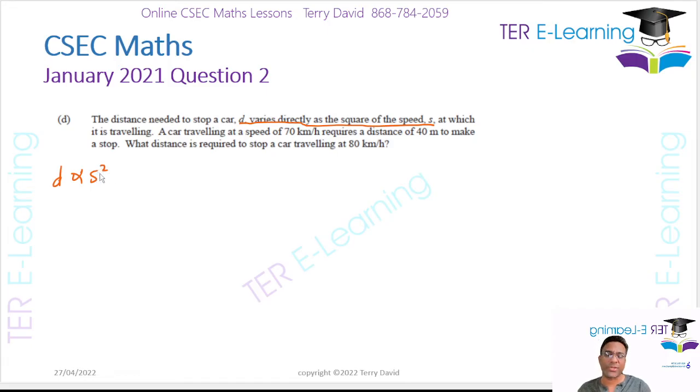Now, we can't work with a proportional sign. And every time you replace a proportional sign, you place an equal. And we have to include a constant inside of that equation. So that's the equation I'm going to be dealing with. d is equal to ks². Now, they gave us some information, and we're going to use that information to figure out what k is.